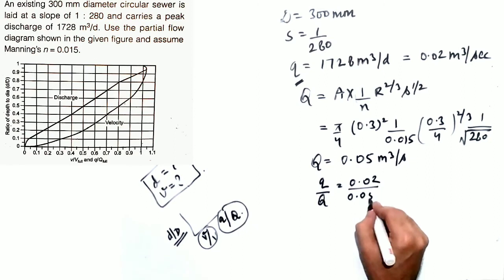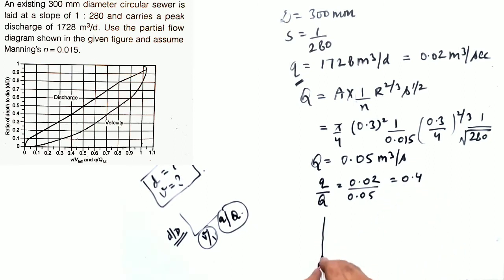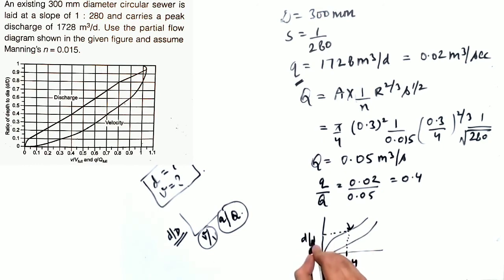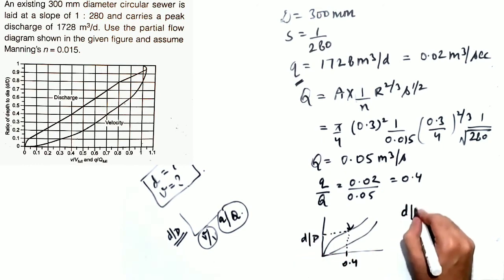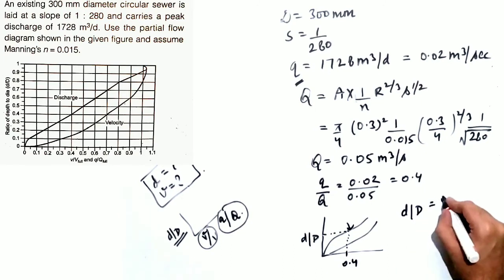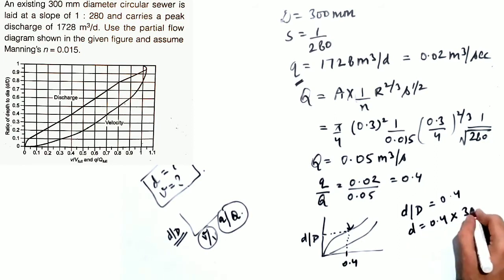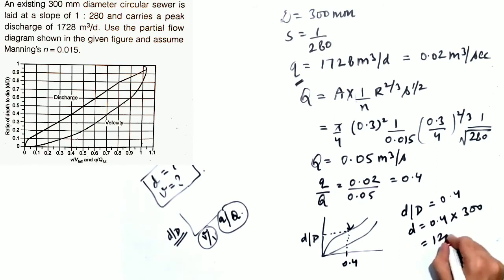Now q/Q = 0.02 / 0.05 = 0.4. From the graph, at q/Q = 0.4, the corresponding d/D value is also 0.4. Therefore, small d = 0.4 × 300 mm = 120 mm. This is the depth of flow.